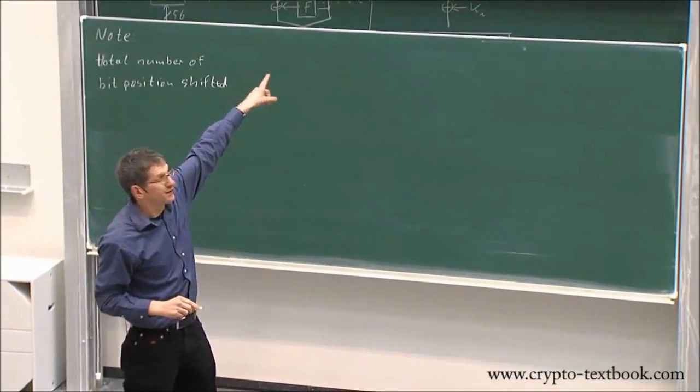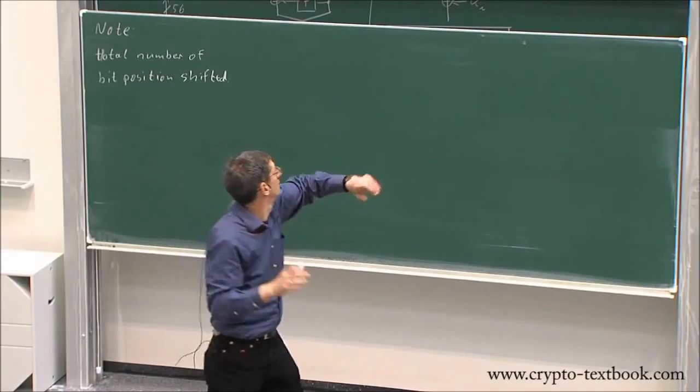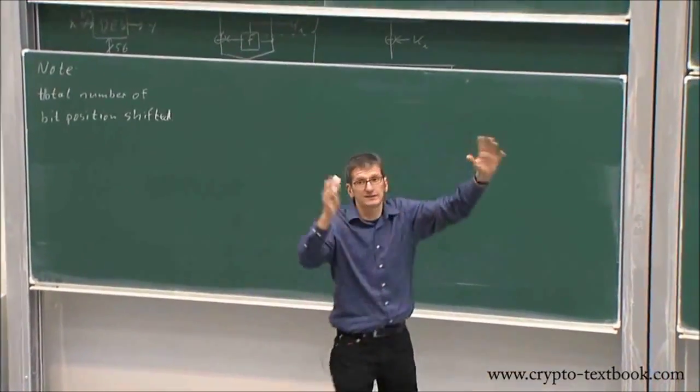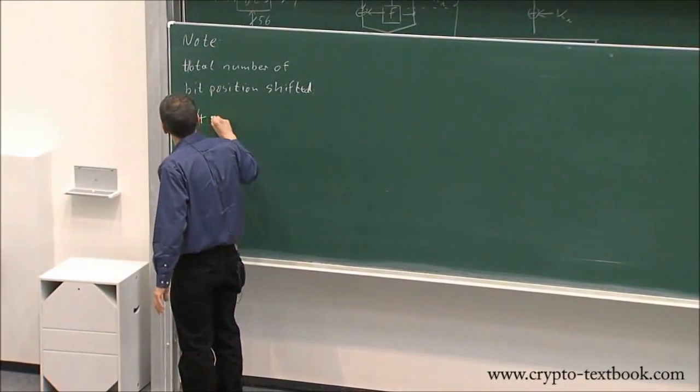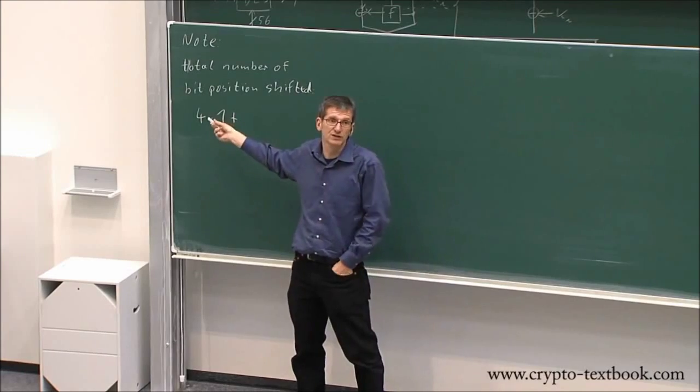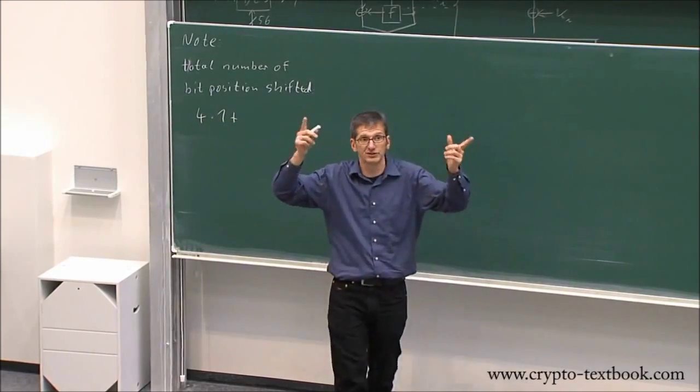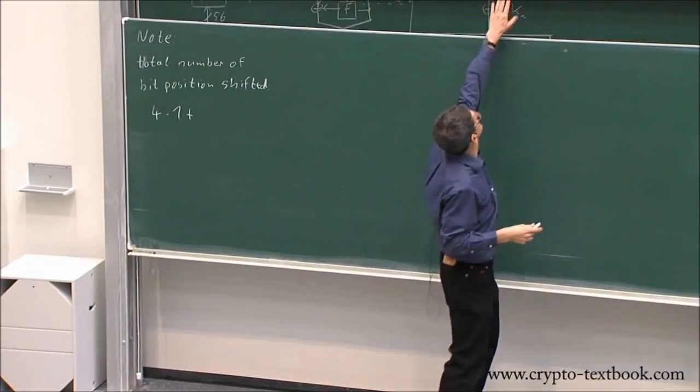So the four rounds that we shift by one bit—the round number one, two, nine, and 16—we rotate by one position. So this is four times one. And how many rounds are left? So the four rounds that we shift by one position, how many rounds are there where we shift by two positions here?